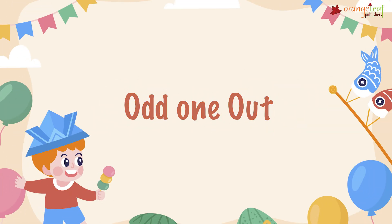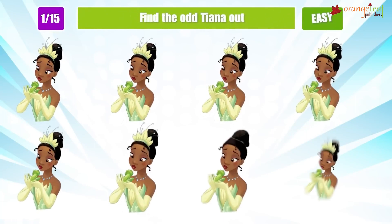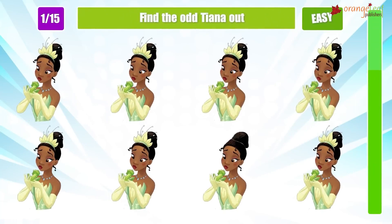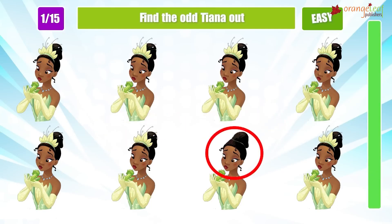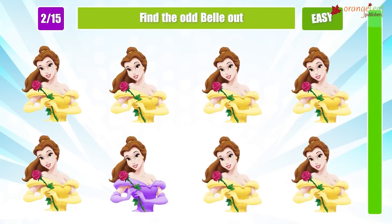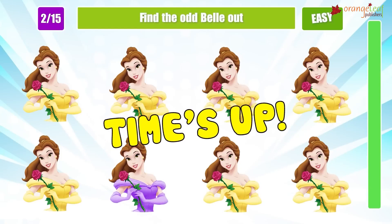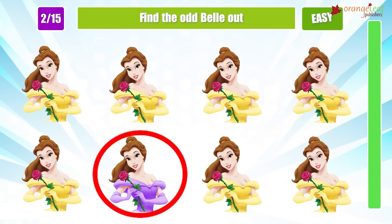Odd One Out. The odd one out is a type of picture puzzle. It is a concept that activates children's thinking ability around a certain area or subject. You need to differentiate the object that is different from all other members of a particular group or set in some way and circle the odd one from each set. The objects can belong to many categories with varying difficulty levels.